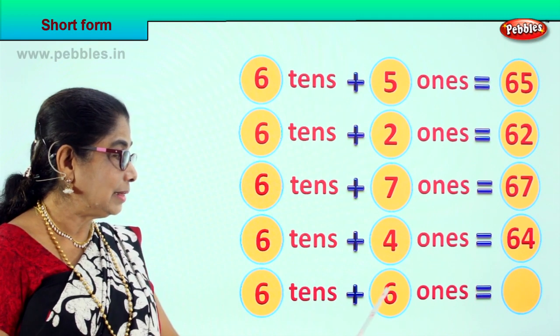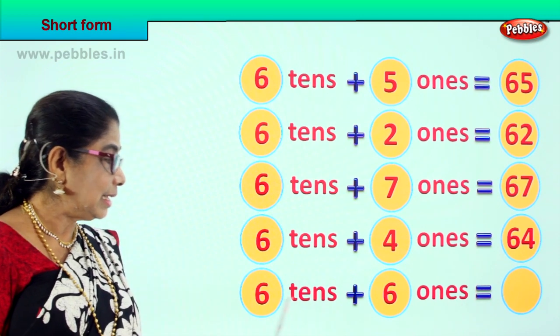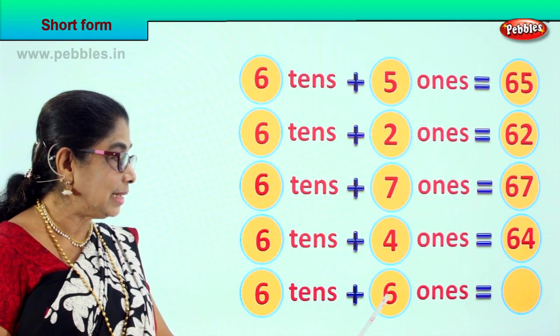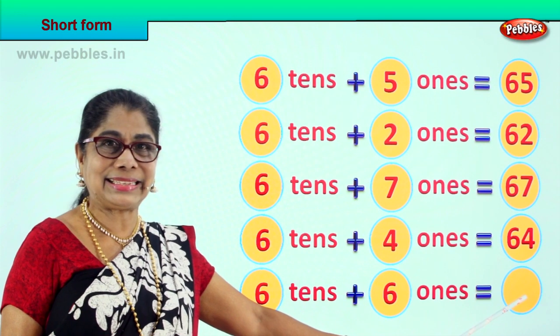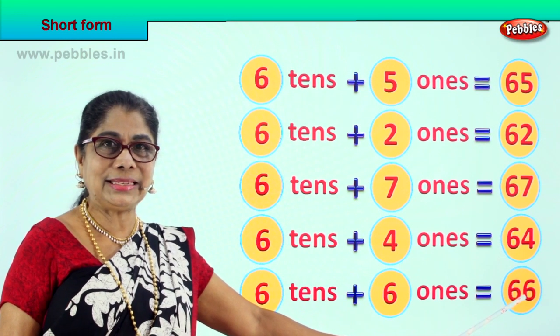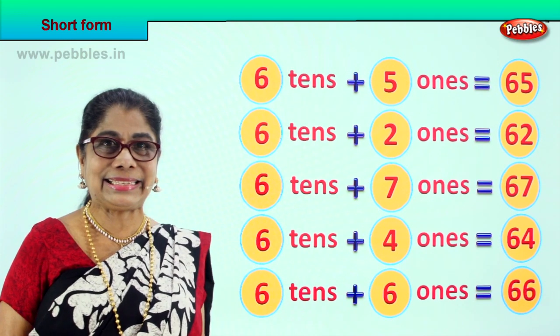Very good. 6 tenths plus 6 ones is equal to? 66. 6 tenths plus 6 ones is equal to? 60 plus 6? 66. What is 60 plus 6? 66.